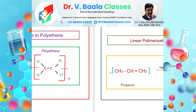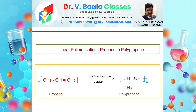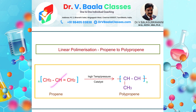One more example: linear polymerization of propene into polypropene. Instead of ethene, we are taking the three-carbon compound called propene. N number of propene at high temperature, pressure and catalyst gives polypropene. That is why propene is called the monomer, and polypropene is the polymer of propene.